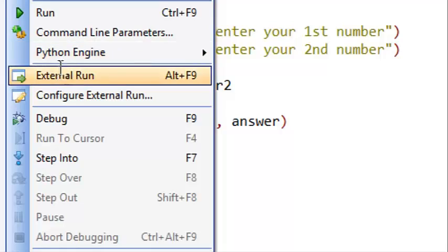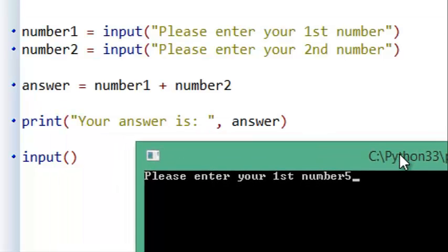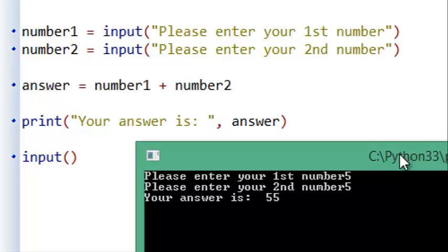Now if we run this code, this is what happens. We ask for a first number: 5, enter another number: 5, and it says here that the answer is 55. That's not correct.